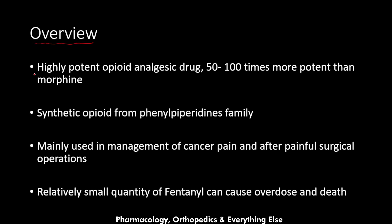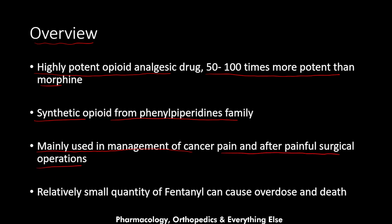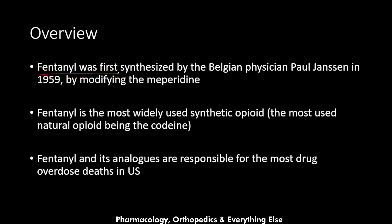Fentanyl is a highly potent opioid analgesic drug — it is 50 to 200 times more potent than morphine, making fentanyl and its analogous agents the most potent opioids available. Fentanyl is a synthetic opioid from the phenylpiperidine family. It is mainly used in management of cancer pain and after painful surgical operations. A relatively small quantity of fentanyl can cause overdose and death, so overdose can easily occur and it is a very dangerous medication.